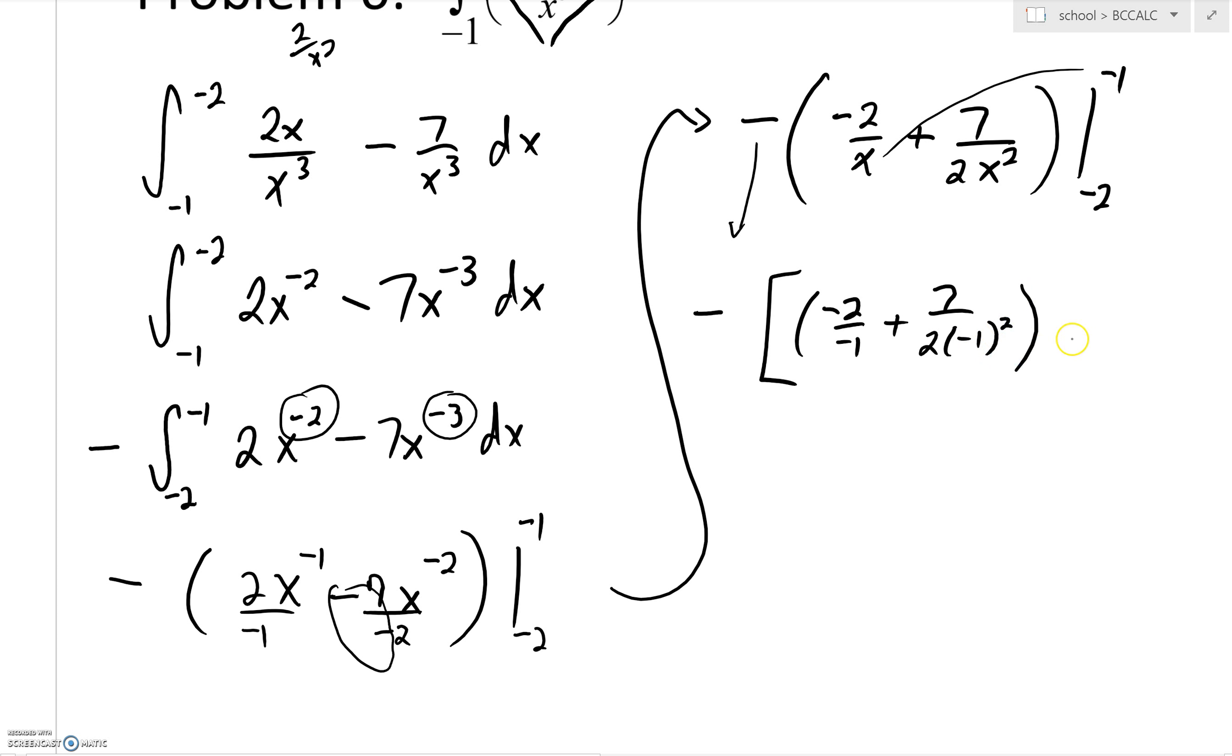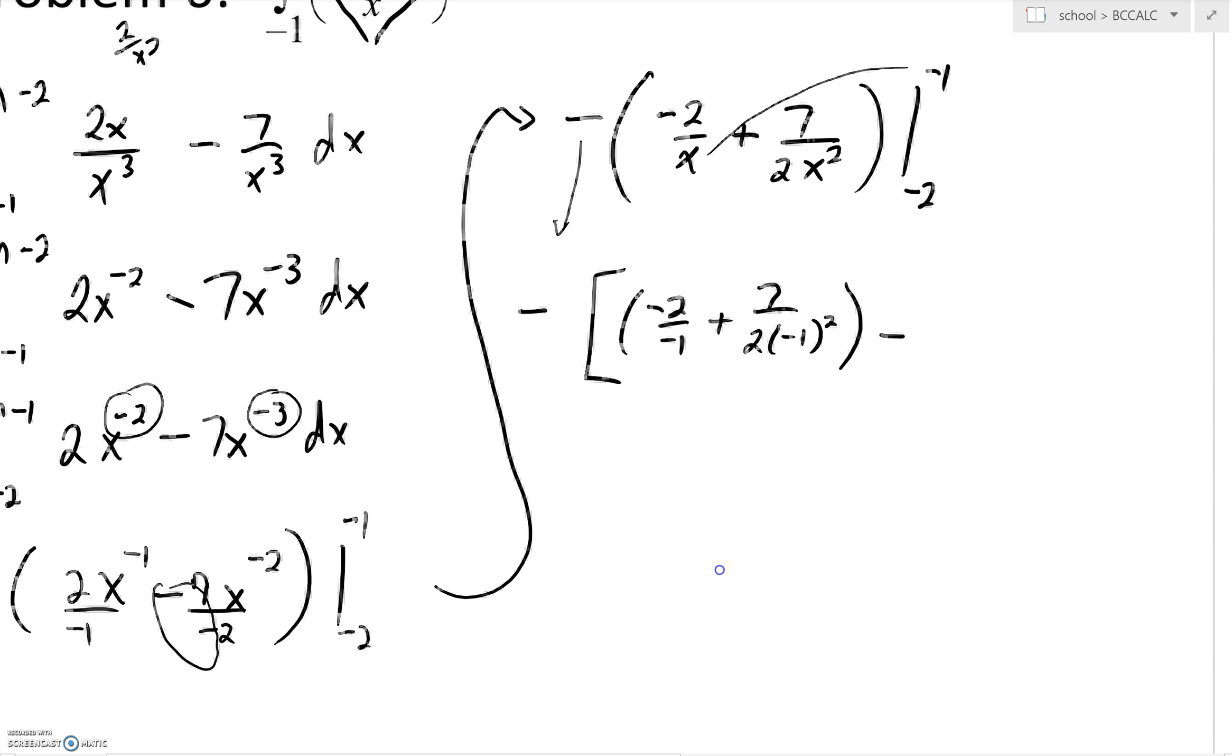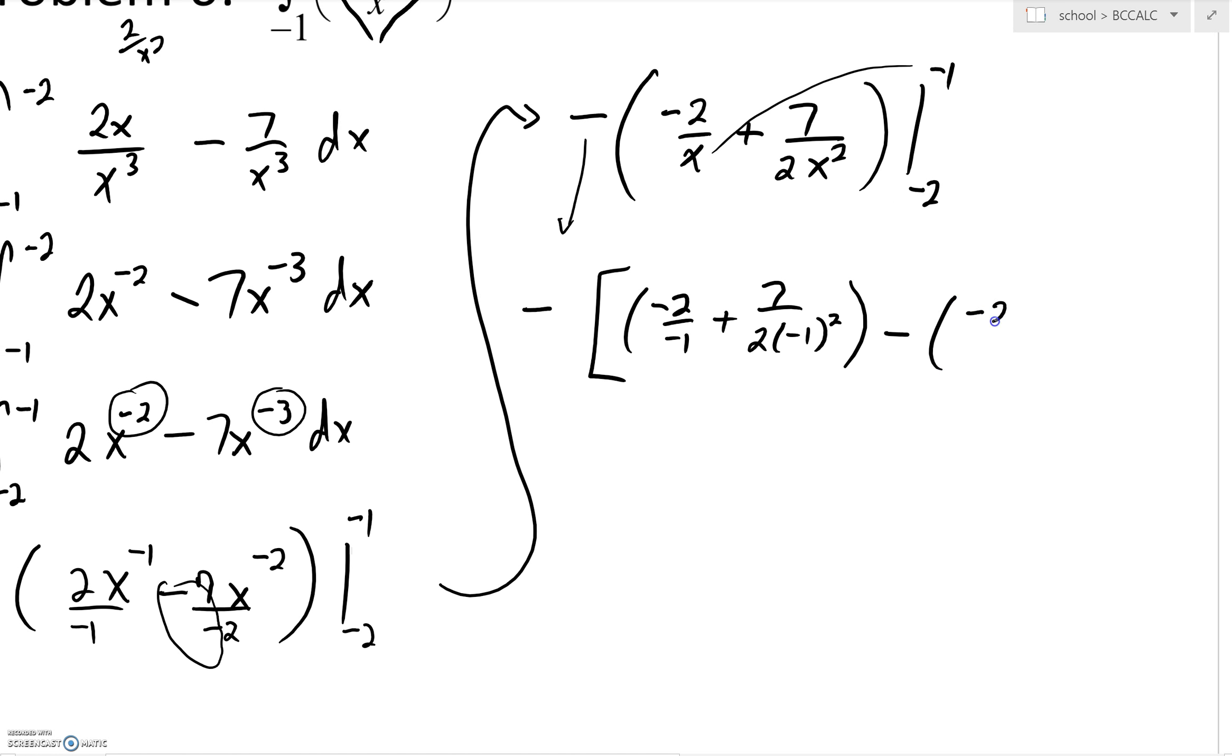And that's our first component. Then we'll say minus. And now I'm going to plug in my negative 2. So I'll say negative 2 over negative 2 plus a 7 over 2 times negative 2 squared.